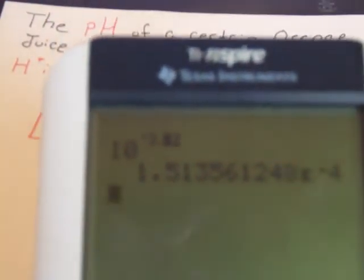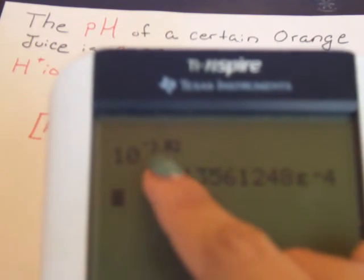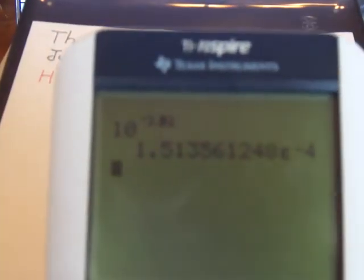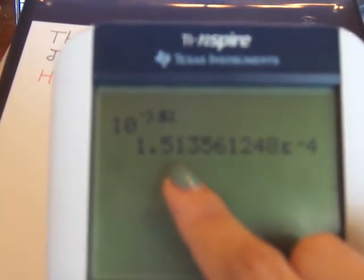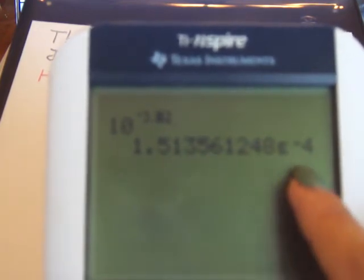So right here all we did was we put 10 to the negative 3.82. I know it's kind of hard to see. Well that's our value though. It's 1.51 times 10 to the negative 4.